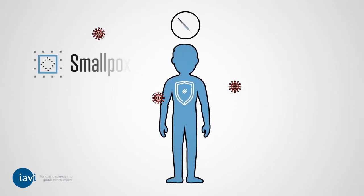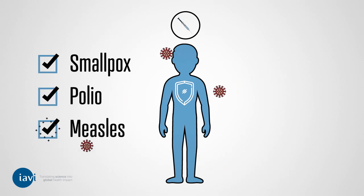Vaccines have helped get rid of smallpox and greatly reduced the spread of harmful diseases such as polio and measles, saving millions of lives every year.